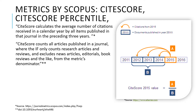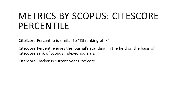Let us see how CiteScore for the year 2015 is calculated: take the average number of citations for the last three years — 2014, 2013, and 2012 — divided by the total number of articles of those last three years. CiteScore includes all items of the journal, not just research and review articles. This is a unique property of CiteScore.